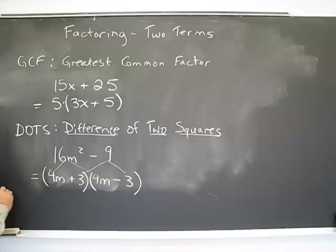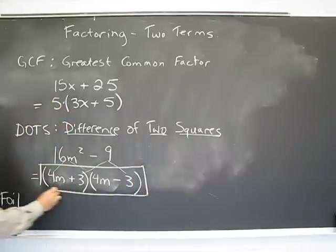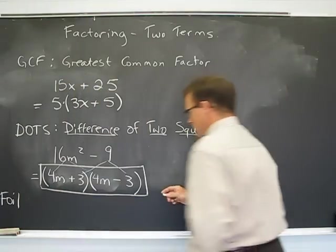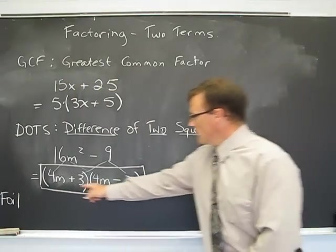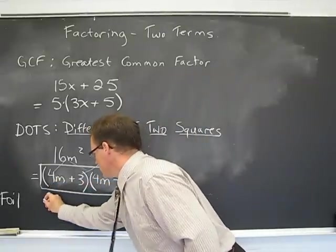Now if you check this by FOIL, you can see, by the way, that's your answer. But if you check it by FOIL, you can see whether or not the product is going to return us to the original. Well, FOIL goes first times first. So that would be 4m times 4m is 16m squared.